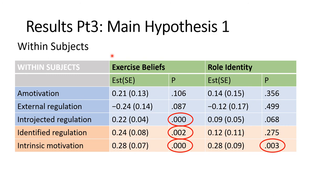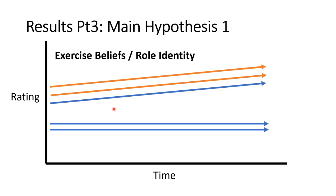For the within-subjects analysis, looking at individual variability across the five motivations and their forms of identity: introjected regulation has a significant relationship with exercise beliefs, and so do the two adaptive forms of motivation. Only intrinsic motivation has a significant relationship with role identity. The two adaptive forms of motivation seem to increase exercise beliefs, and intrinsic motivation can increase role identity. Interestingly, introjected regulation — a non-adaptive form — also seems to have predictive power with exercise beliefs.